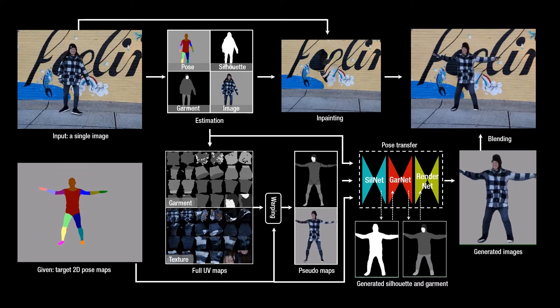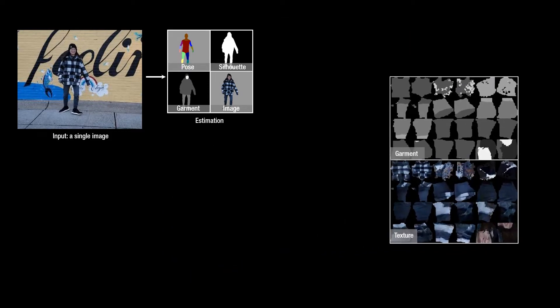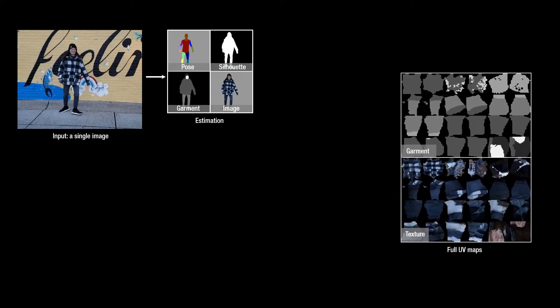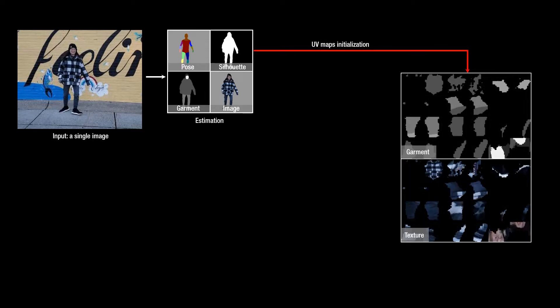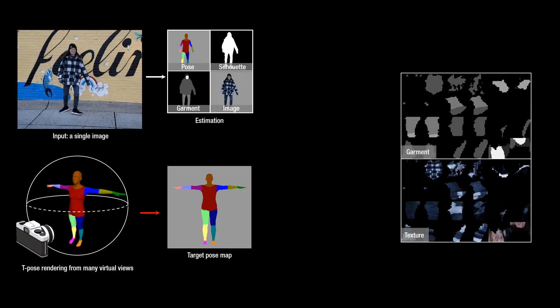To reconstruct the complete UV maps, we first initialize them by warping the source data to the UV coordinate. However, the initial UV maps are incomplete, which prevents creating the pseudo-maps in a temporally coherent way. To complete these UV maps, we further combine the pixels from the synthesized images captured by many virtual views.